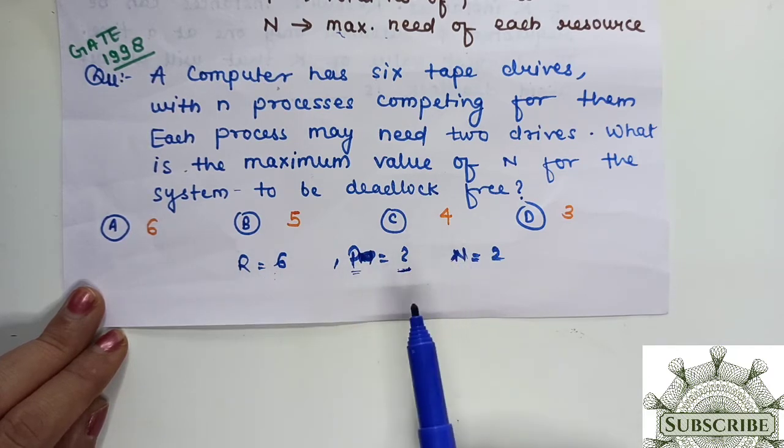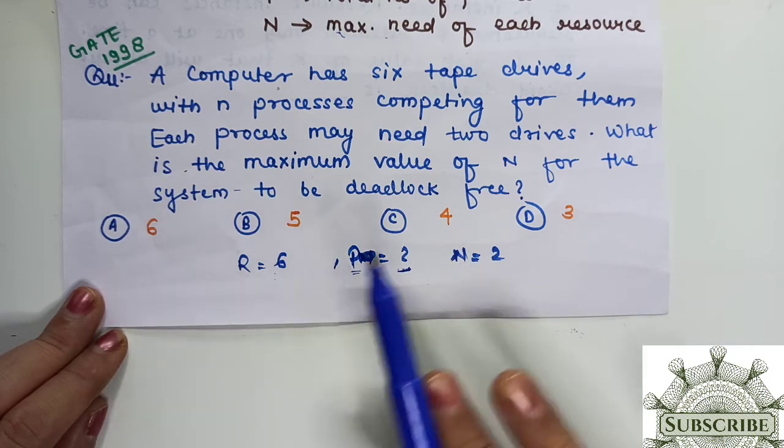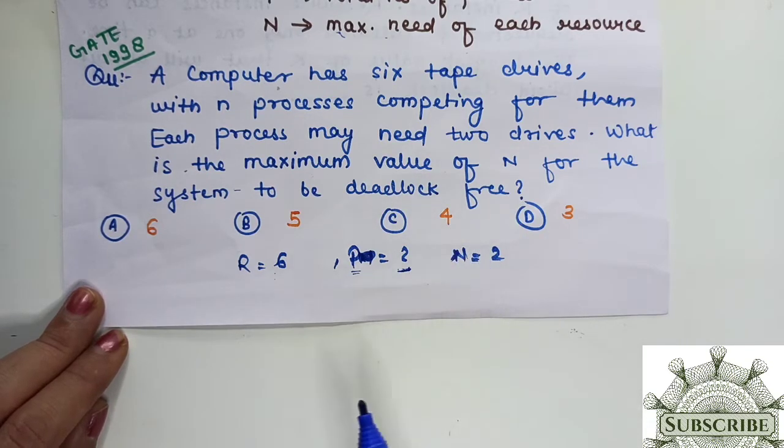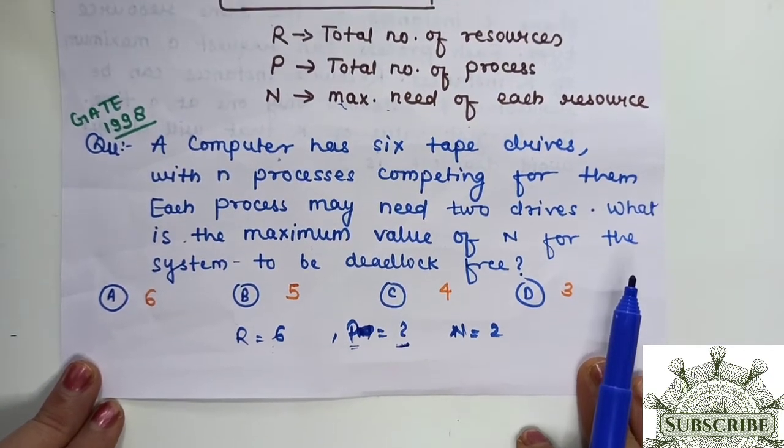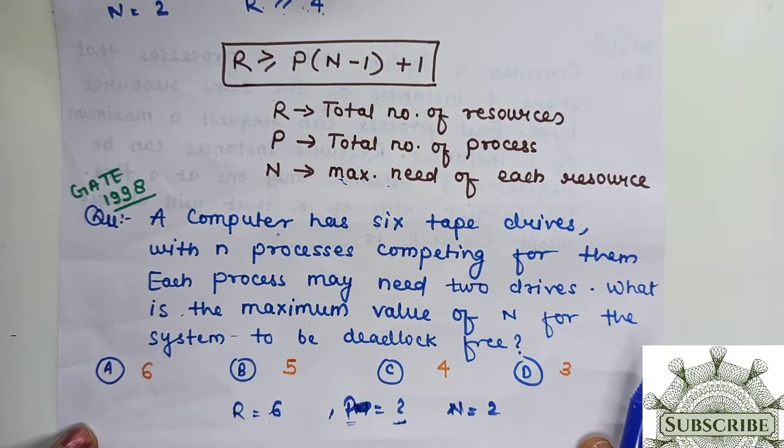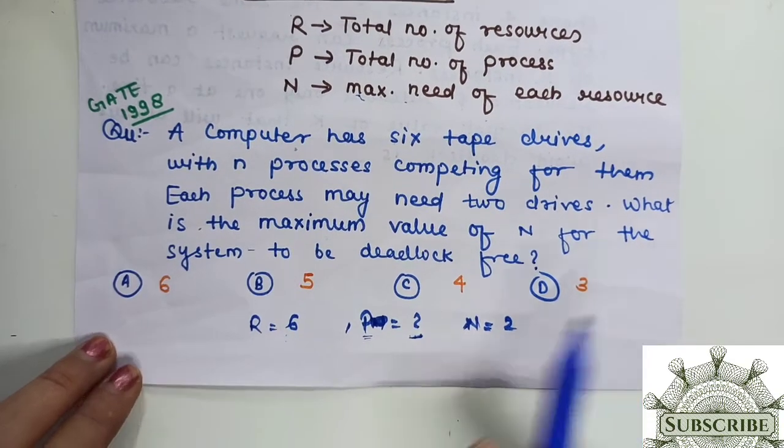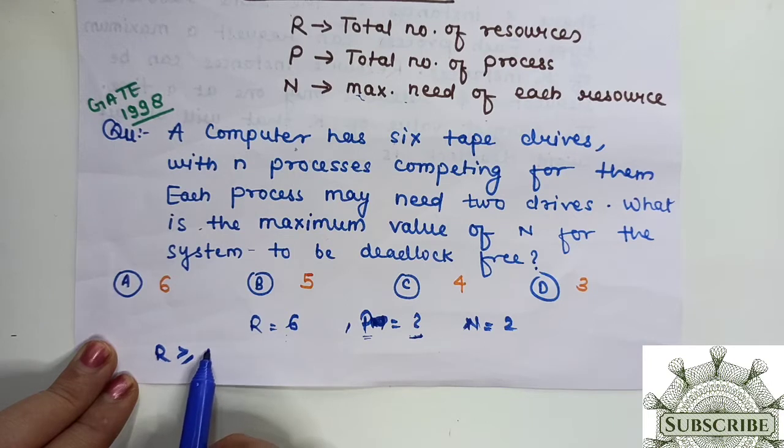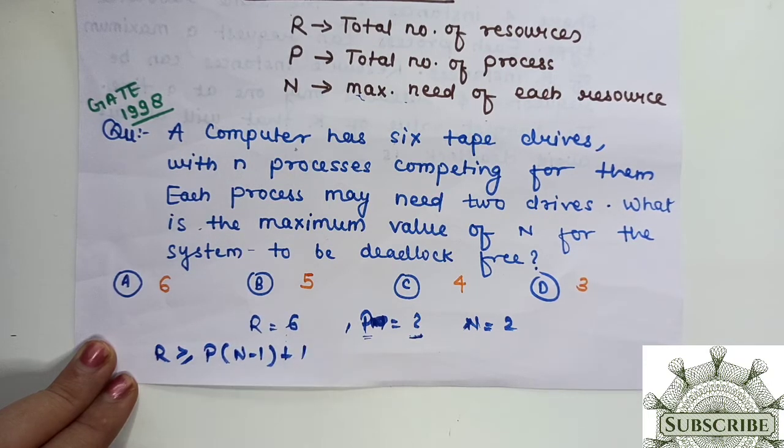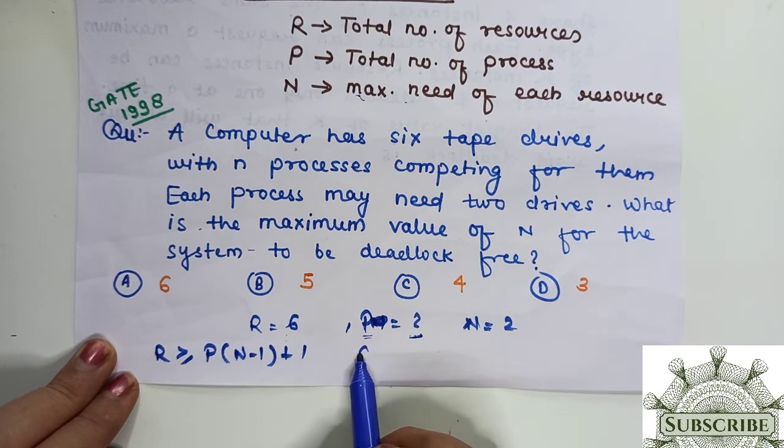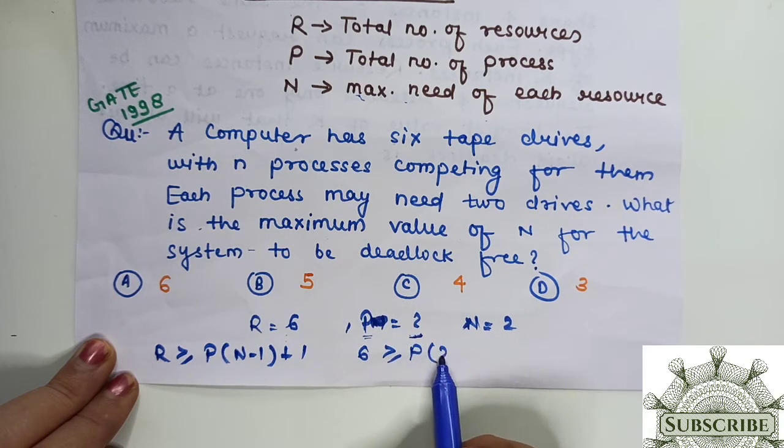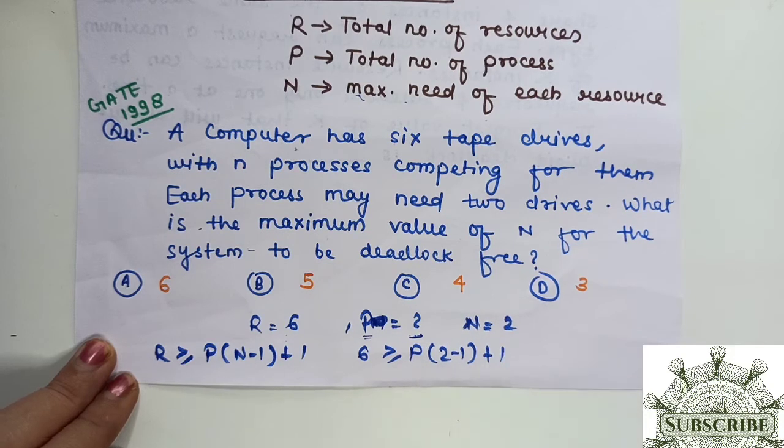Our system will be deadlock free. How many processes can we execute? Can we put in that formula? This is the formula if you remember. If I put in this formula, R ≥ P(N-1) + 1. R given is 6, is greater than or equal to P we don't know, times 2 minus 1, plus 1.